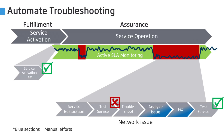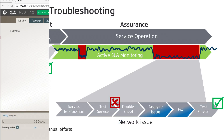In the second scenario, there is an underlying network issue. NetRounds and NSO conclude that it is not a configuration issue like the previous scenario. So NSO automatically triggers a troubleshooting sequence in NetRounds, where NetRounds immediately starts to sectionalize the problem to isolate the location in the network and provides a detailed report to the stakeholders who can then fix the problem.